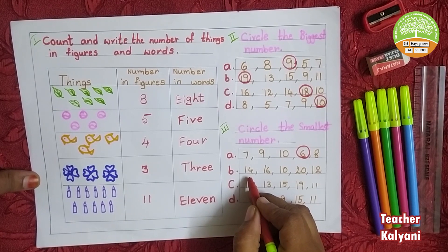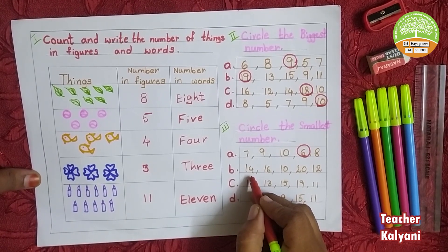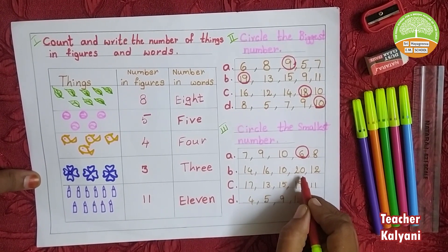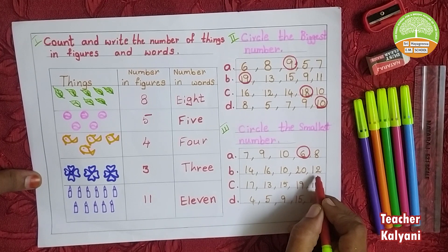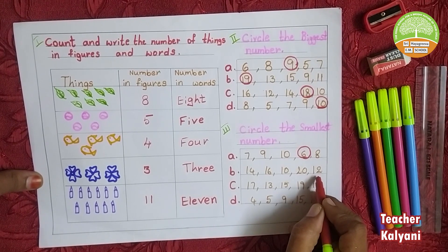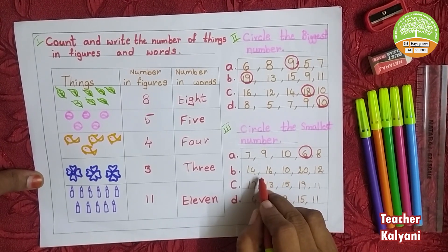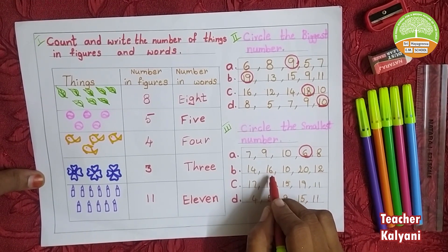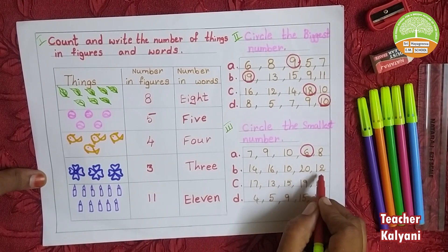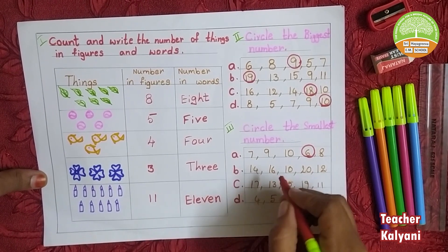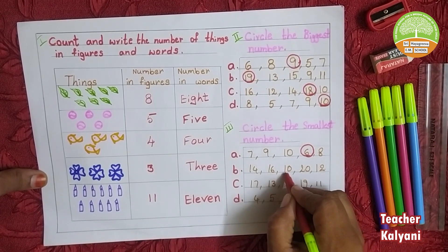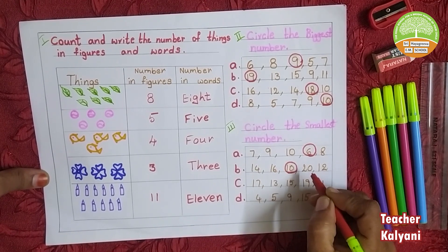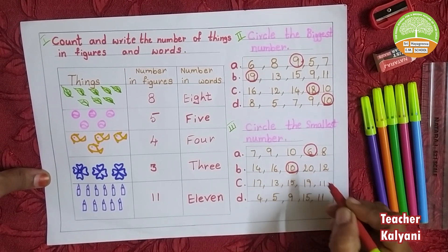Next one: 14, 16, 10, 20, 12. Which is the smallest number in this box? 10. 10 is the smallest number.